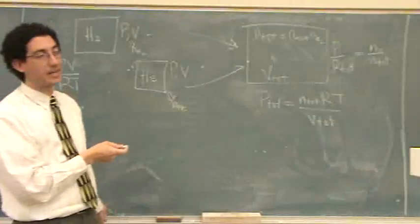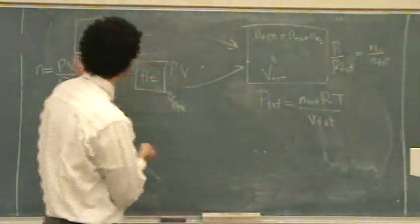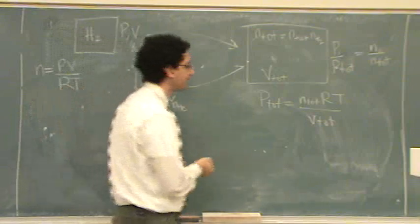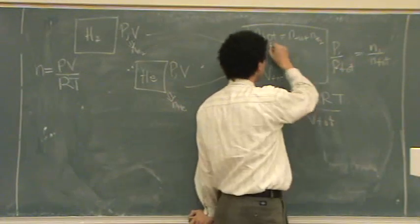So you need to know the tank size. T would be the temperature. Usually you're doing these at all equal temperatures. R is the ideal gas law constant. N total, that's from right here.